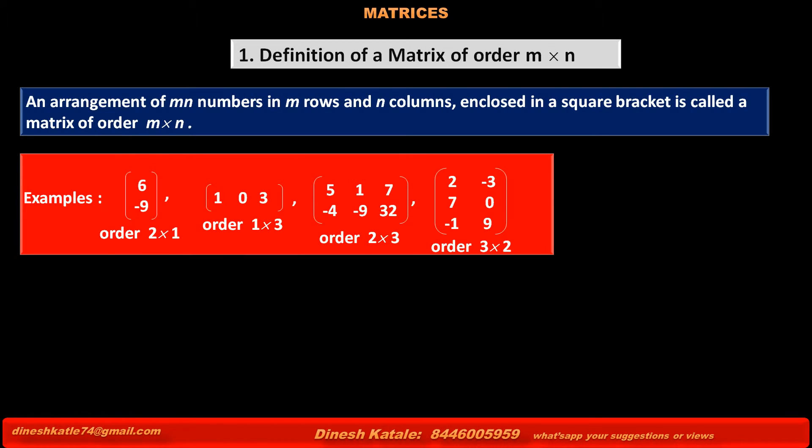The fourth matrix also contains six elements. In the first row: 2, minus 3; in the second row: 7, 0; and in the third row: minus 1, 9. This matrix has three rows and two columns.